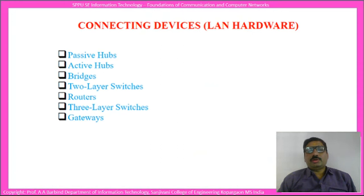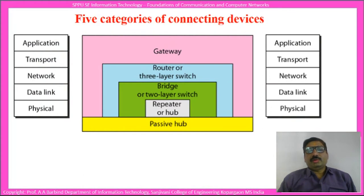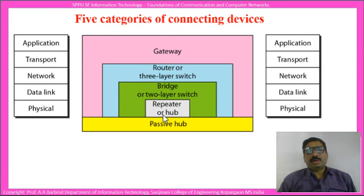The LAN hardware, or connecting devices for the LAN, consist of passive hubs, active hubs, bridges, two-layer switches, routers, three-layer switches, and gateways. This diagram shows at which layer these devices appear in the LAN. The passive hub is considered to be below the physical layer, while the repeater or active hub is essentially at the physical layer.